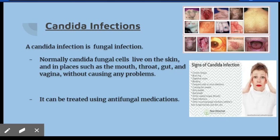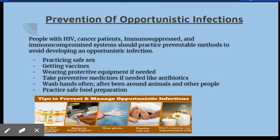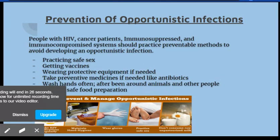Prevention of opportunistic infections is really important in cancer patients, HIV, and immunocompromised patients. They should practice preventable methods to avoid developing opportunistic infections, such as practicing safe sex, getting vaccines, wearing protective equipment such as gloves, taking preventive medicines if needed like antibiotics to prevent further infections, washing your hands often, and practicing safe food preparation.